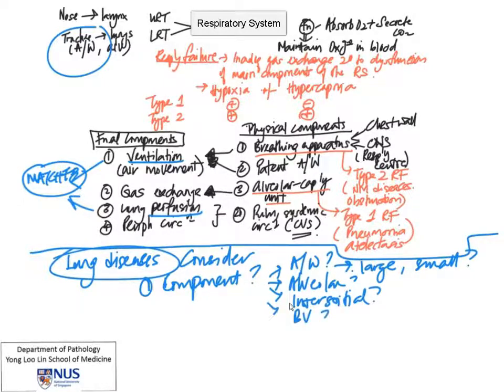Would it be the alveolar spaces, the interstitium, or the blood vessels? Bear in mind that these components can sometimes be multiply involved in a single disease.